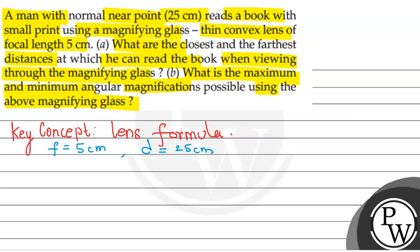Then, the closest object distance is U and the image distance is V. So this is equal to minus, and this is equal to minus 25 centimeter. Now, according to the lens formula, 1 over F equals 1 over V minus 1 over U.